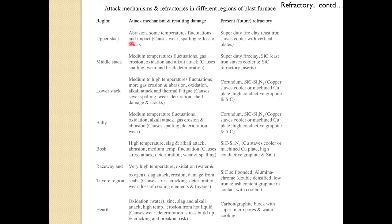In the upper stack region, abrasion and impact are the two main concerns, with lower temperature fluctuation. Super duty fire clay with cast iron step cooler with vertical plate is used. In the middle stack region, medium temperature fluctuation, gas erosion, oxidation, and alkali attack cause spalling, wear, and brick deterioration. Super duty fire clay and sometimes silicon carbide with cast iron step cooler are used. In the lower stack region, high temperature fluctuation and more gas erosion from the cohesive zone occur, where coke permeability allows gas passage at higher velocities.